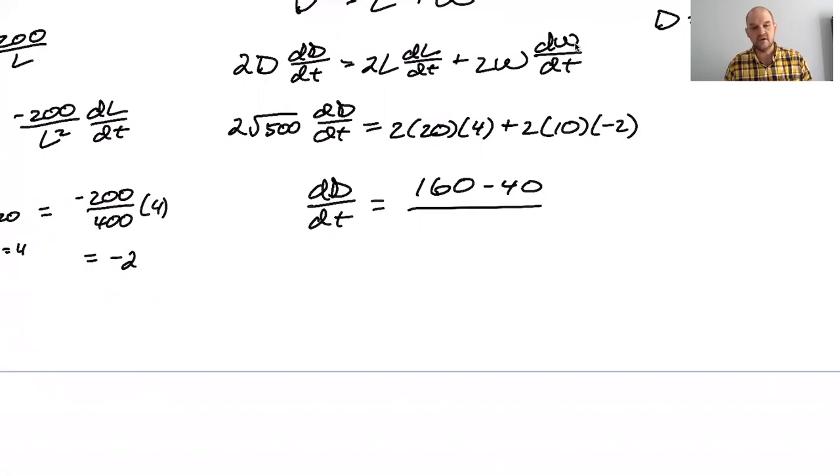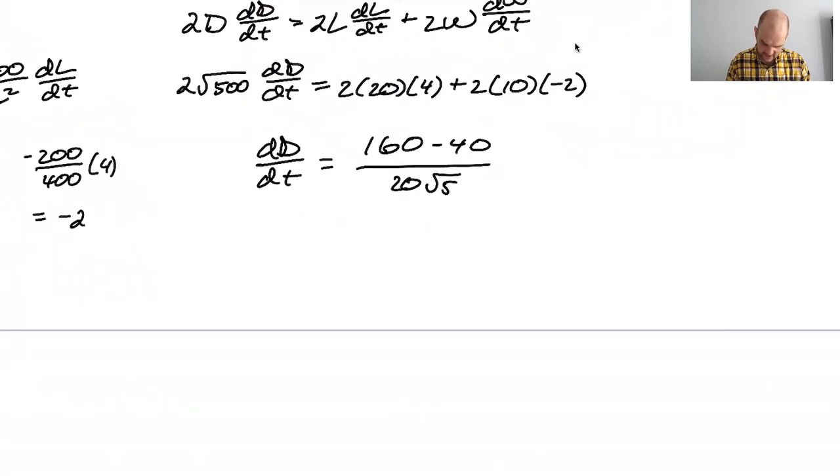Radical 500 is 10 root 5. So 20 over 20 root 5. I hope that's not like the place I screwed up. So 120 over 20 is 6 over root 5. dD/dt, 6 over root 5.